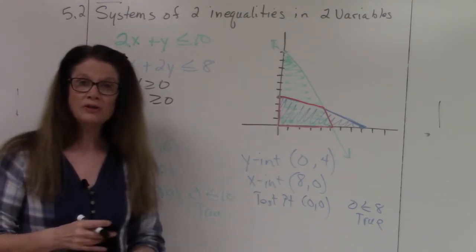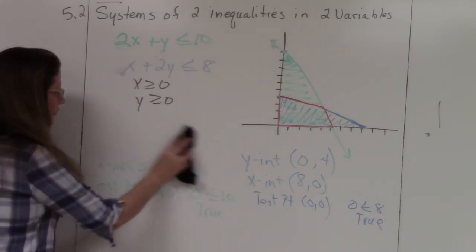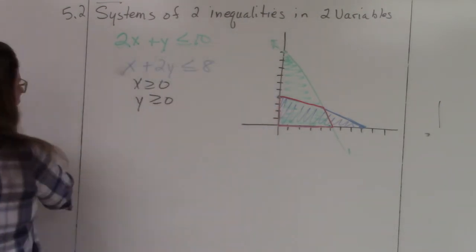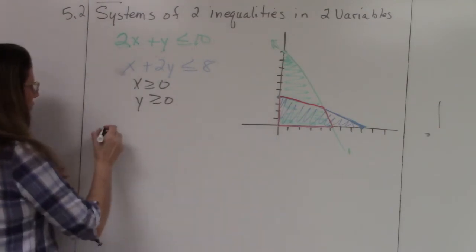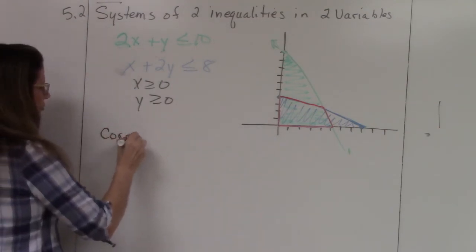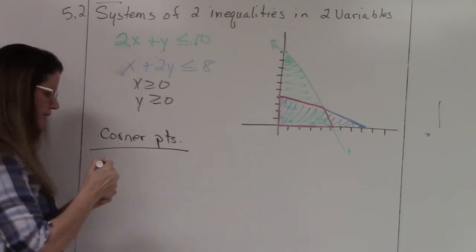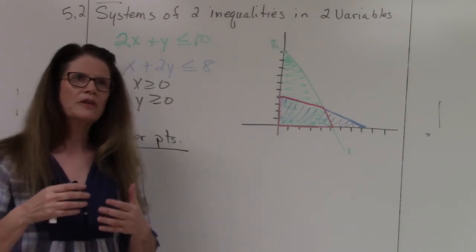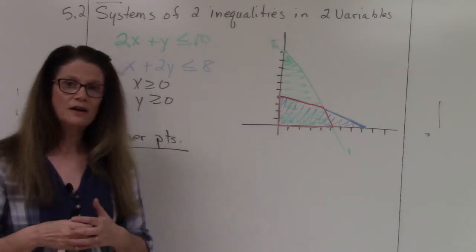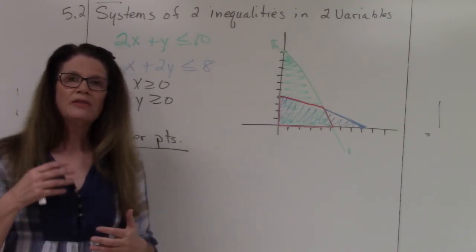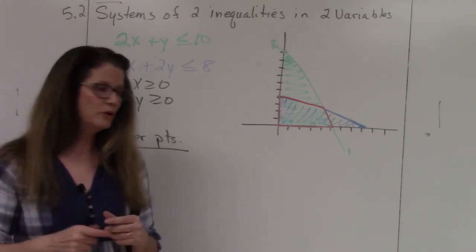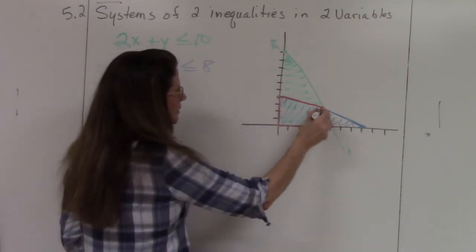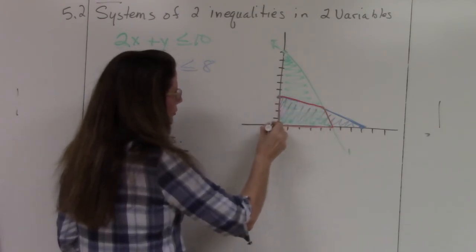This is the new part of section 5.2: finding our corner points. What the corner points indicate — and this is the application part — is the maximum or minimum values. Maximum or minimum values only happen at the corner points, specifically the corner points of the feasible region.